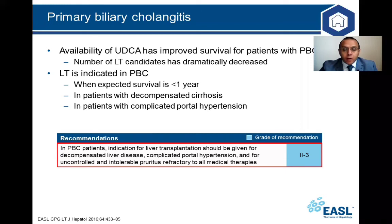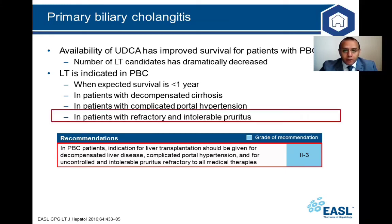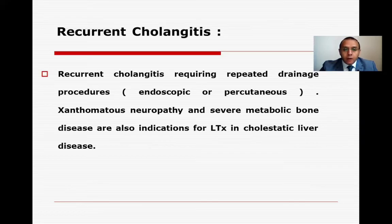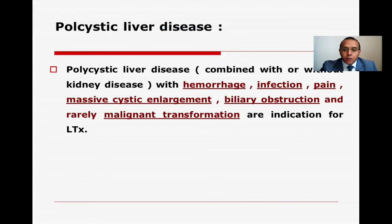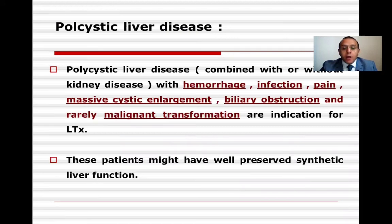EASL guidelines recommend that patients with refractory and intractable pruritus are indicated for liver transplantation. Recurrent cholangitis requiring repeated drainage procedures — either endoscopic or percutaneous — in patients with cholestatic liver disease is also an indication for liver transplantation, as stated in EASL 2016 guidelines. Polycystic liver disease — combined with or without kidney disease — with complications such as hemorrhage, infection, pain, massive cystic enlargement, biliary obstruction, or rarely malignant transformation, are indications for liver transplantation, even when patients have well-preserved synthetic liver function.